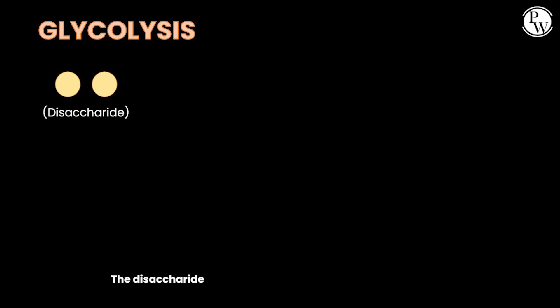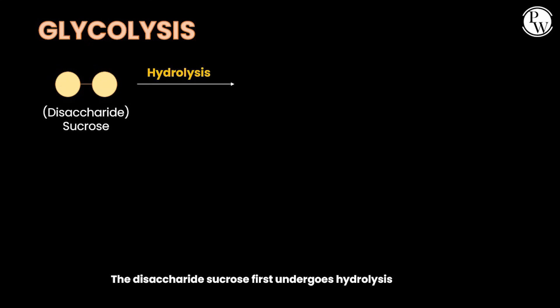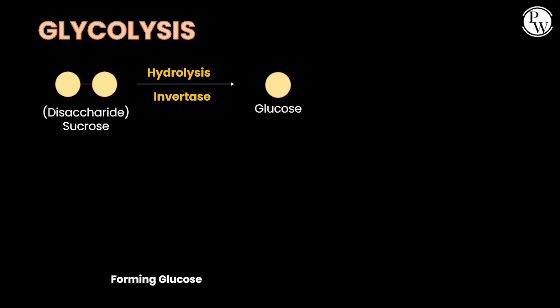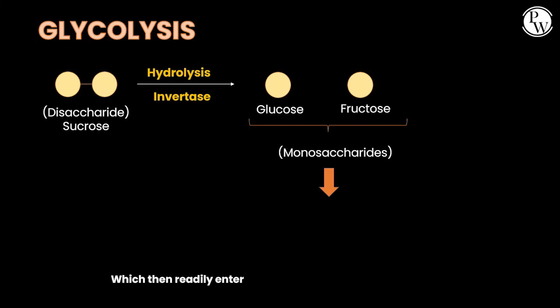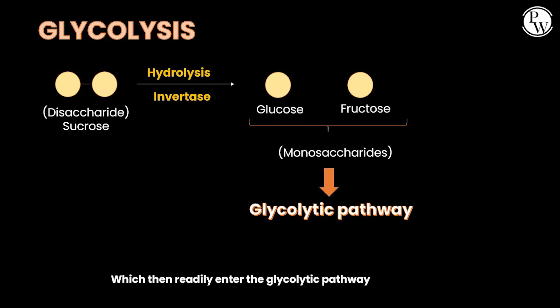The disaccharide sucrose first undergoes hydrolysis using the enzyme invertase, forming glucose and fructose — both of which are simple monosaccharide units, which then readily enter the glycolytic pathway.